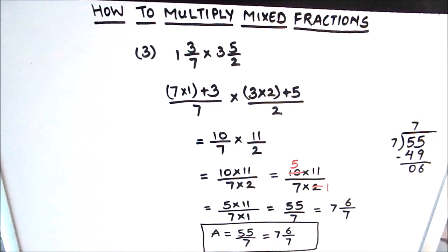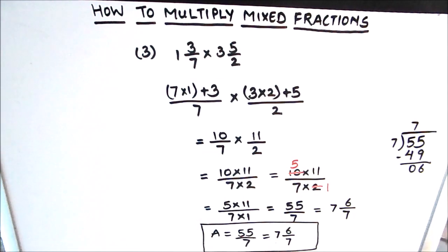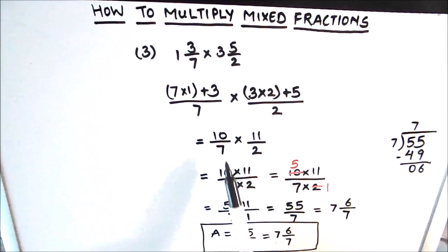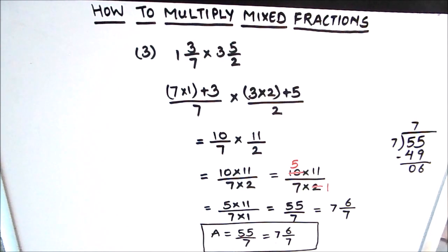This is how we multiply mixed fractions. Let's take a recap of the method: first, convert the mixed fraction into an improper fraction. For multiplying fractions, multiply the numerator of one fraction with the numerator of the other, and the denominator of one with the denominator of the other. Before writing the answer, check whether there is a common factor between the numerator and denominator. If there is, simplify the fraction and then write the final answer. I hope this video is helpful. If you like the video, please hit the like button and subscribe to my channel for more math videos. Thanks for watching.